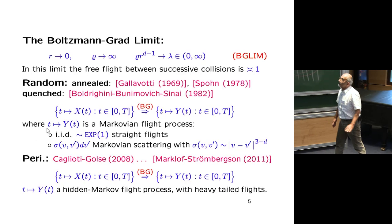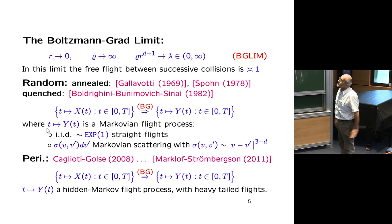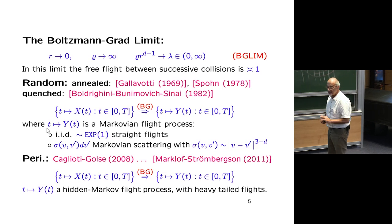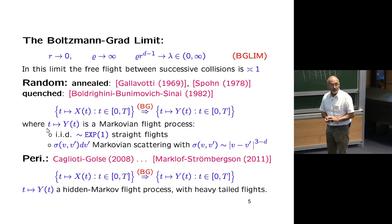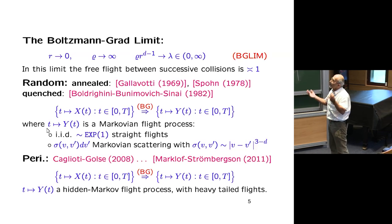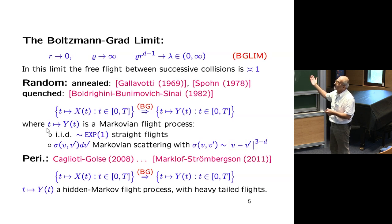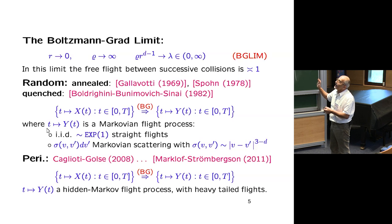The Boltzmann-Grad limit: in both cases this is the limit where the typical free flight length is of order one. My formulation is to let R go to zero and density go to infinity such that their product — R^{d-1} times rho — goes to, say, one. That is the limit I consider.